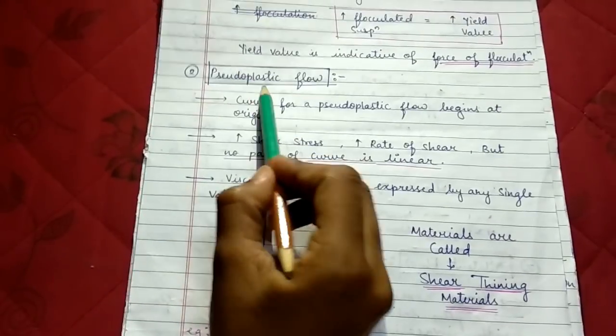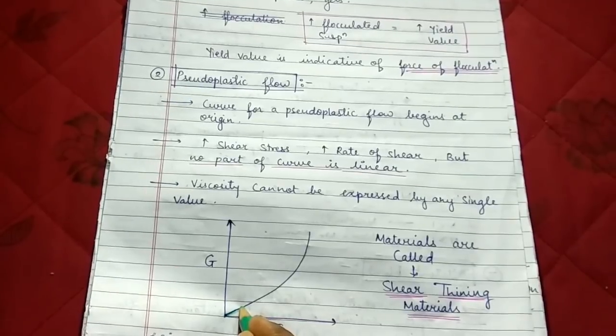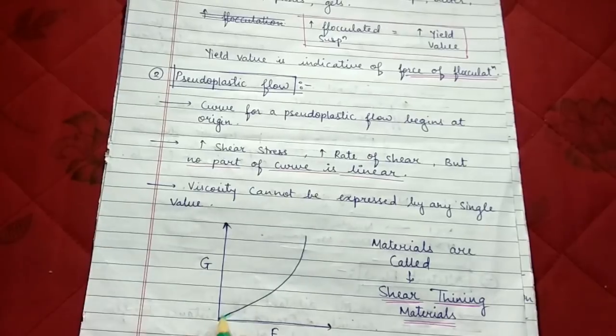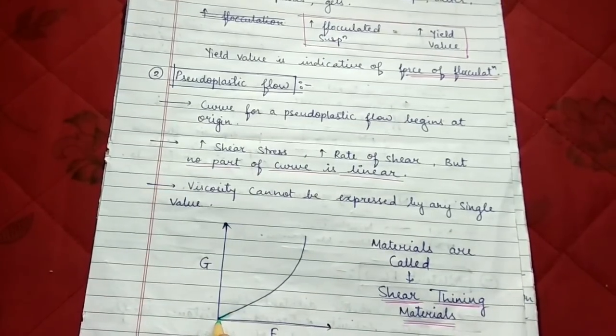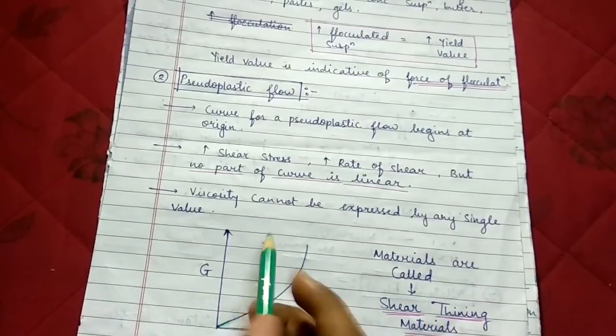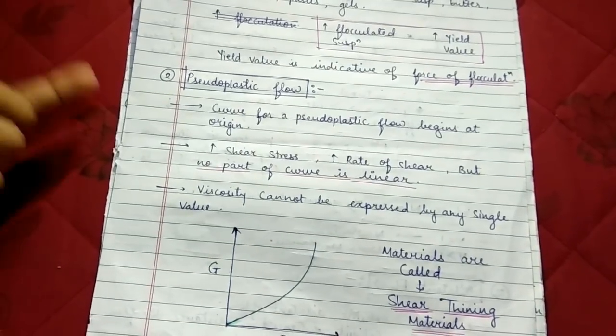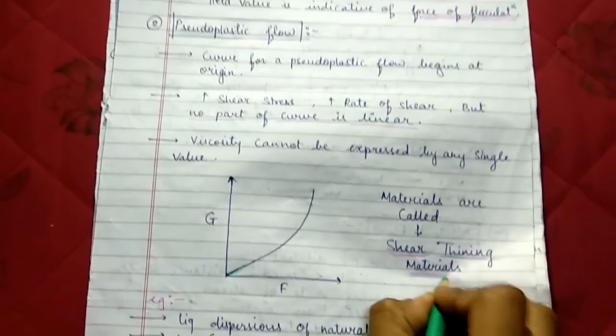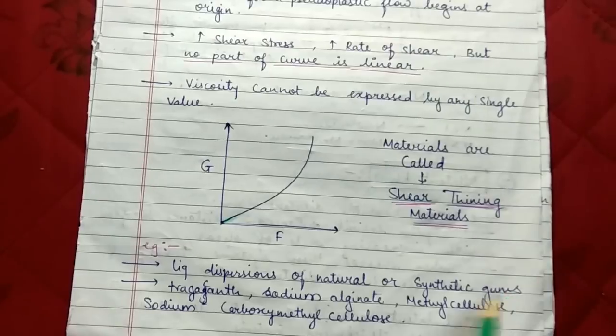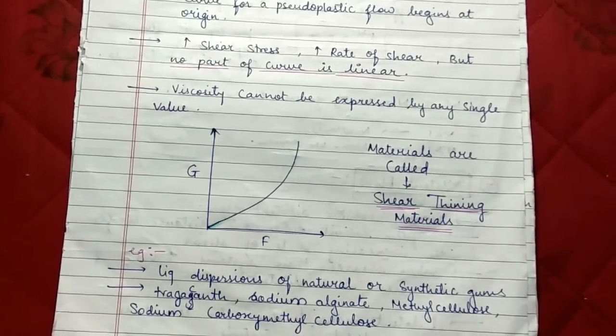Second type of flow is pseudoplastic flow. The curve for pseudoplastic flow begins at origin. It is completely a curve with no part which is linear. If there is increase in stress and increase in rate of shear, there will be a curve which is non-linear. Viscosity cannot be expressed at any single value. Materials which follow pseudoplastic flow are known as shear thinning materials. Examples include liquid dispersion of natural or synthetic gums like tragacanth, sodium alginate, methylcellulose, or sodium carboxymethylcellulose.